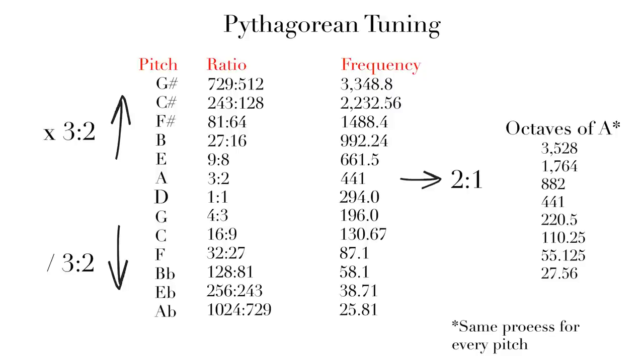As I've mentioned before, the simpler the ratio, the more perfect the interval. More complex ratio, more dissonant interval. You'll notice the further that we get away from the center note, the more complex the ratios get.